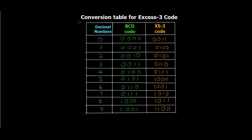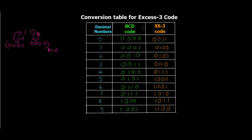Now let's move on to the digital blackboard. On screen I have the conversion table for XS3 code — decimal numbers in the first column, BCD code in the second, and XS3 code in the third. BCD code is essentially the 4-bit binary representation of every decimal digit: zero is 0000, one is 0001, and so on up to nine. XS3 code is essentially adding three — three in binary is 0011.